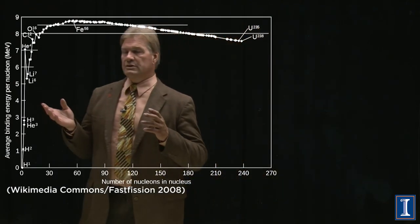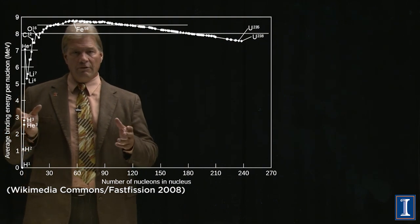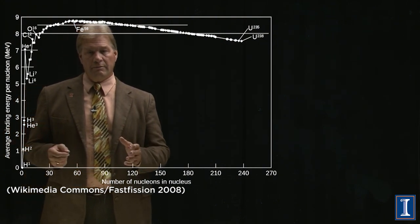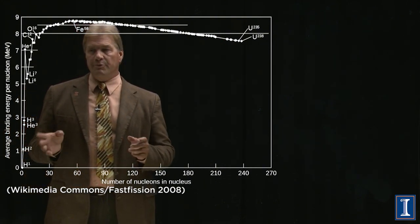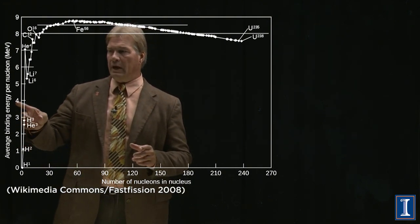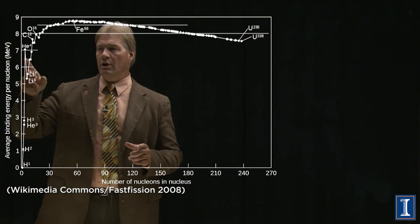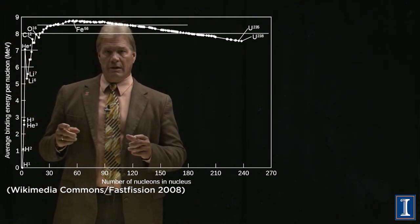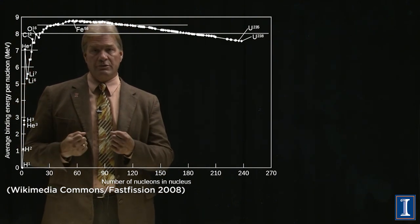This is a chart of the stability of the different nuclei. And to put it in these terms, you have to actually do this as the average binding energy per nucleon. A nucleon is a neutron or a proton.